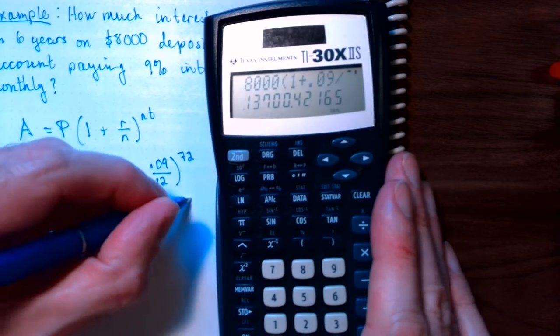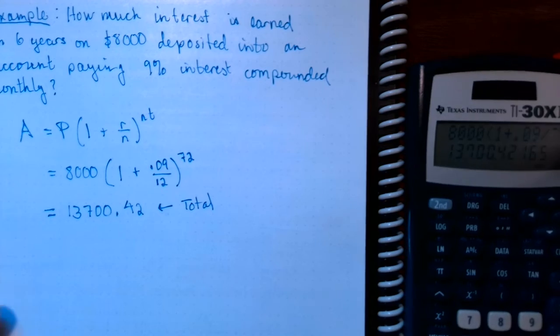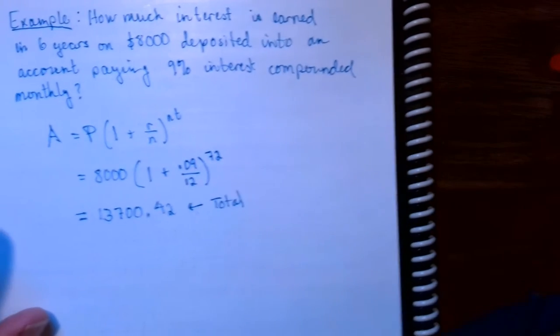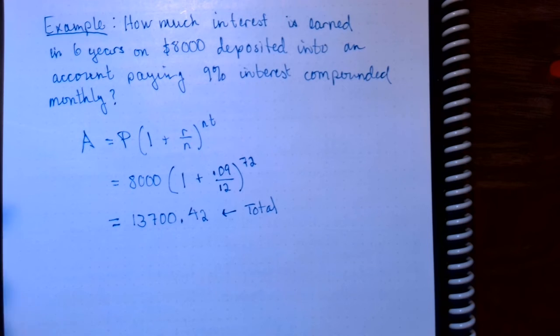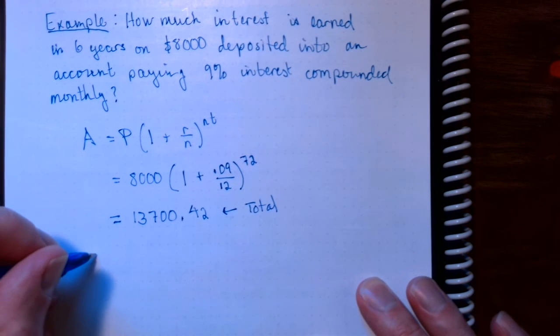Now this is the total that we have in the account. That includes the $8,000 principal plus the interest that we earned.